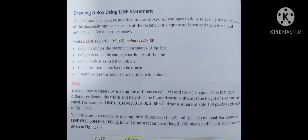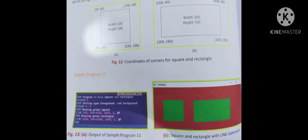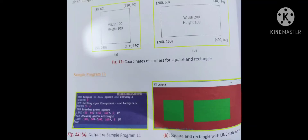Sample program 11 draws a square and rectangle: SCREEN 8, COLOR 3, 4 — cyan foreground and red background. To draw a green filled square: LINE (50,60)-(150,160), 2, BF. To draw a green filled rectangle: LINE (200,60)-(400,160), 2, BF. The output shows a square and rectangle drawn with the LINE statement.